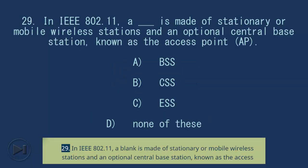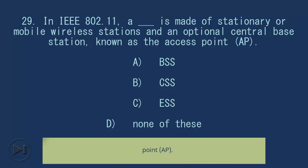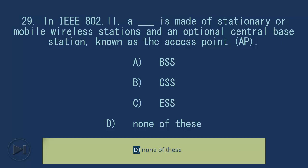Question 29: In IEEE 802.11, a blank is made of stationary or mobile wireless stations and an optional central base station known as the access point (AP). A. BSS, B. CSS, C. ESS, D. None of these. Answer: A. BSS.